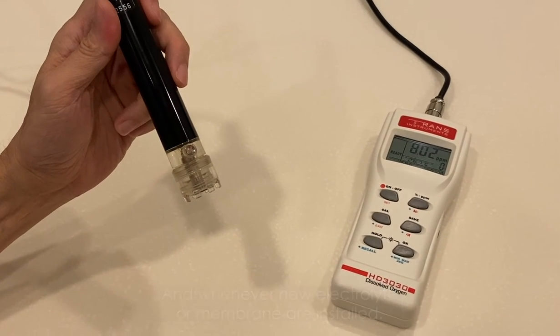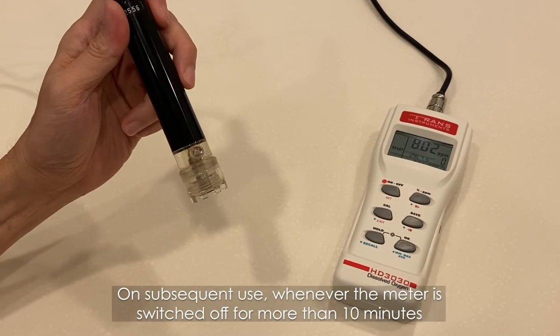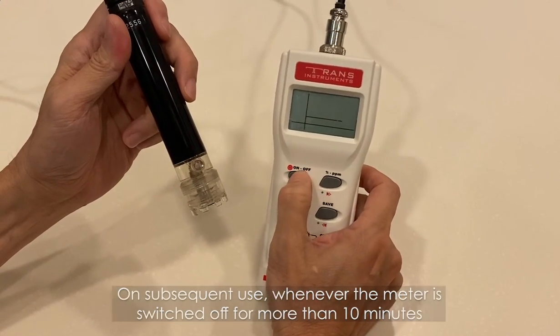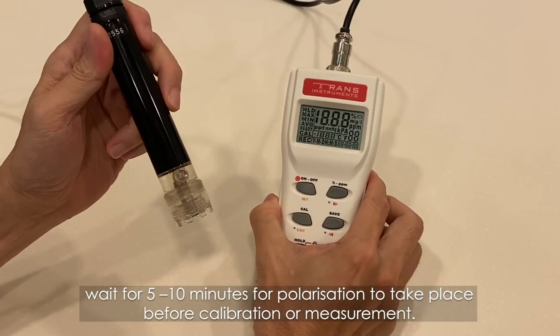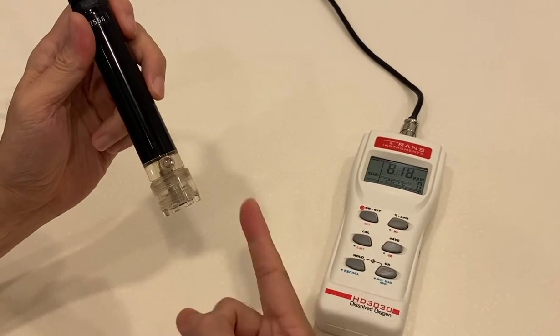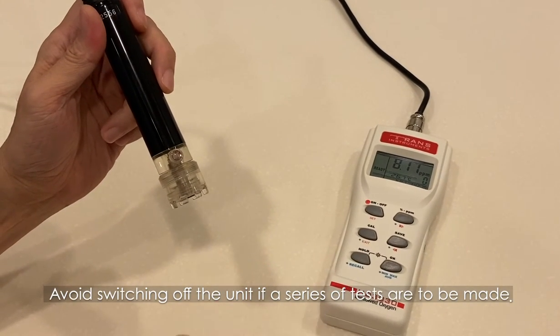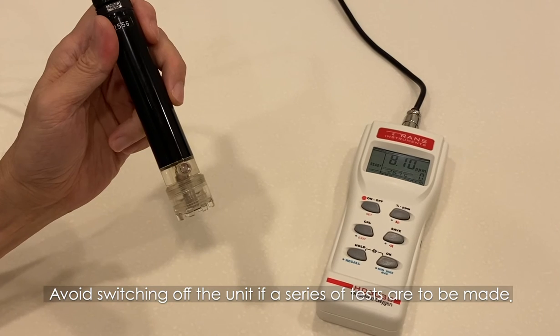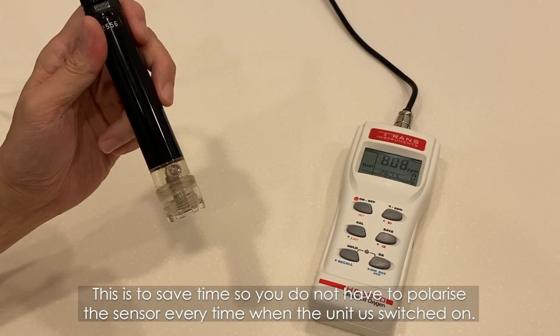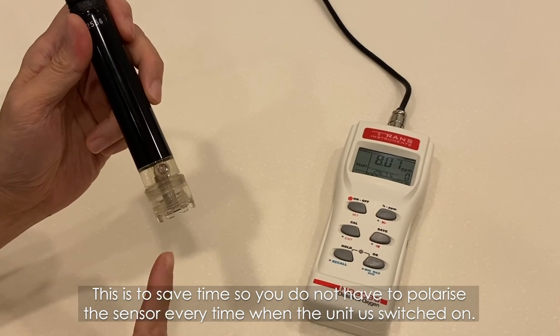On subsequent use, whenever the meter is switched off for more than 10 minutes, wait for 5 to 10 minutes for polarization to take place before calibration or measurement. Avoid switching off the unit if a series of tests are to be made. This is to save time so you do not have to polarize the sensor every time when the unit is switched on.